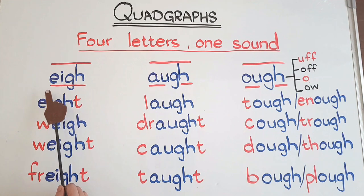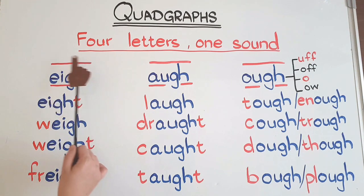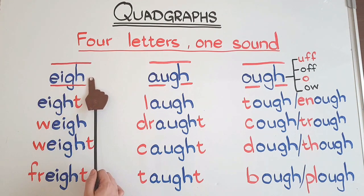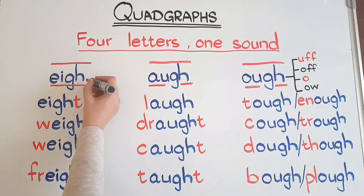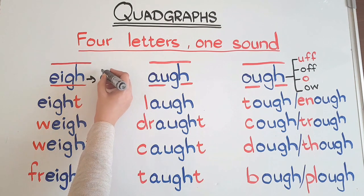The first quadgraph is E-I-G-H. When these four letters are together, we say them as A - simply A, the long vowel sound.